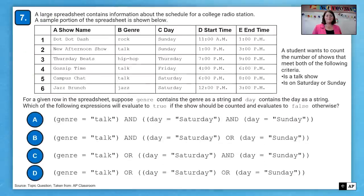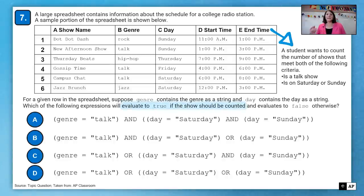All right, question number seven. A large spreadsheet contains information about the schedule for a college radio station. A sample portion of the spreadsheet is shown below. We're looking over here at the question at the right. A student wants to count the number of shows that meet both of the following criteria: it is a talk show and is on Saturday or Sunday. For the given row in the spreadsheet, suppose genre contains the genre as a string and day contains the day as a string.